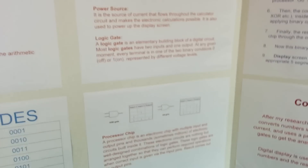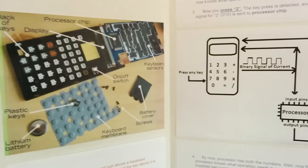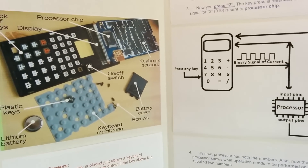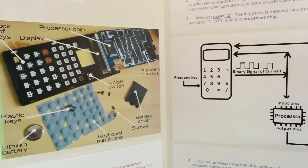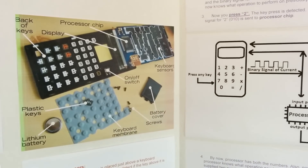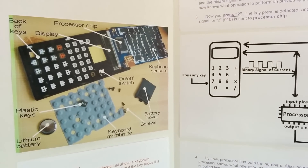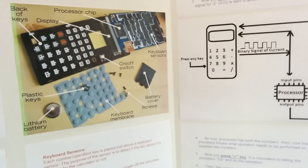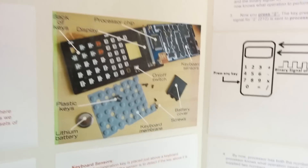And you know how it does that very fast? Current — the calculator calculates very fast, like in one second or less, because current is very fast. And current is the thing that's doing everything inside the calculator. And that's how the calculator works.